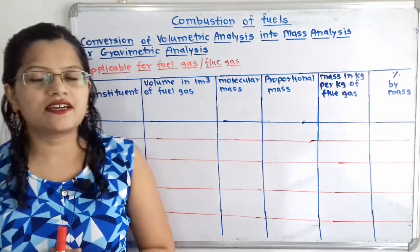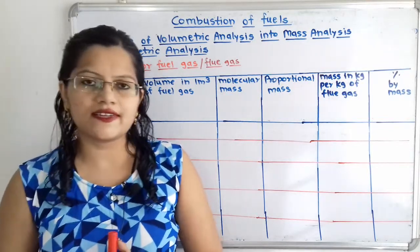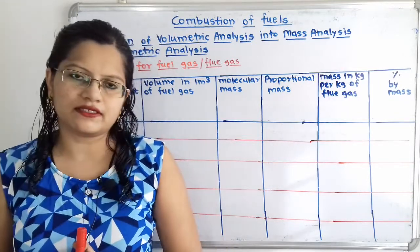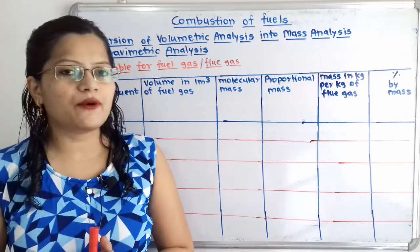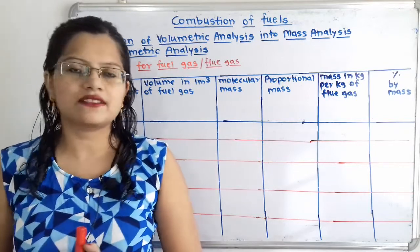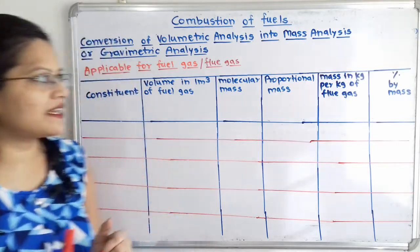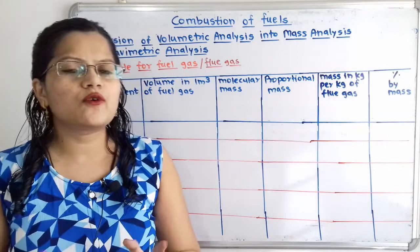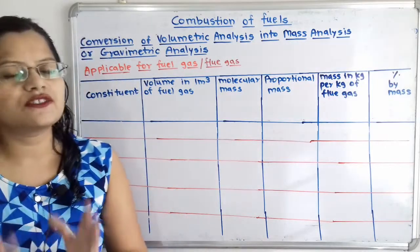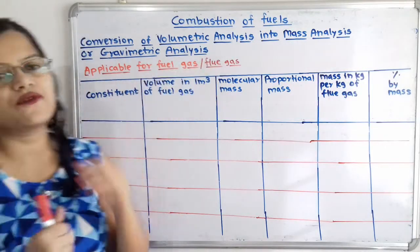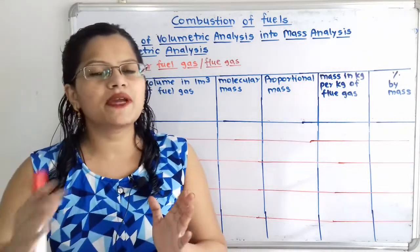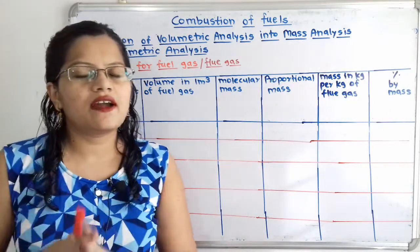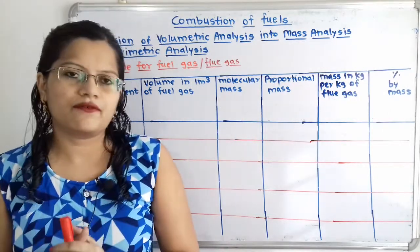Let us first understand conversion of volumetric analysis into mass analysis or gravimetric analysis. When volumetric composition of any fuel gas is given, then we can convert it into mass analysis or gravimetric analysis. It is important to note that this conversion is only applicable for fuel gases or flue gases. To make this conversion, we have to make one table, and we will understand all the elements in the table one by one.